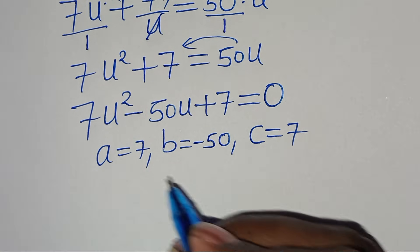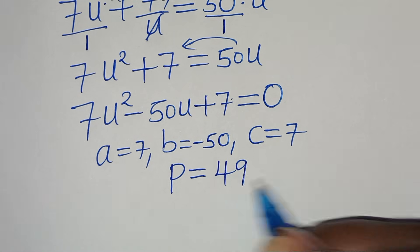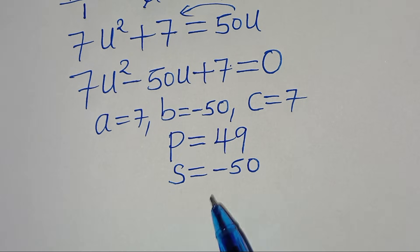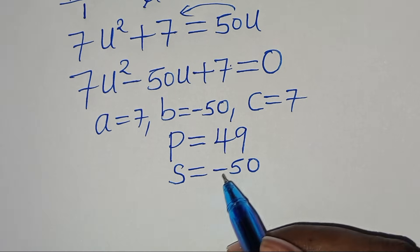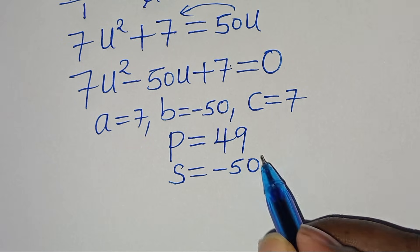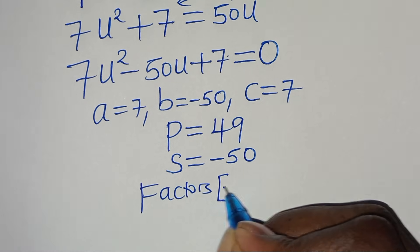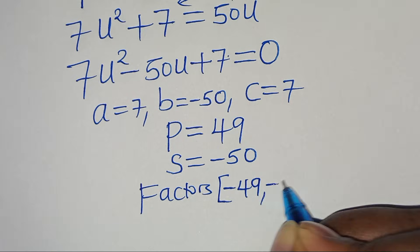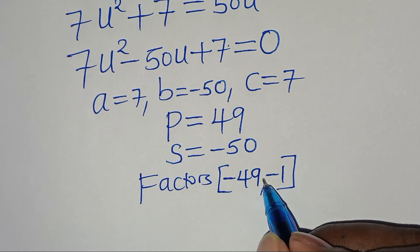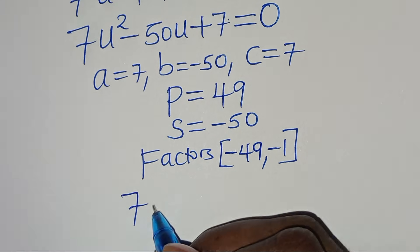We can solve this quadratic equation by the factorization method. The product is equal to 7 times 7, which is 49, and the sum is equal to minus 50. We need to identify two factors such that when we multiply them we get 49, and when we sum them we get minus 50. These two factors are minus 49 and minus 1, since minus 49 times minus 1 is 49 and minus 49 plus minus 1 is minus 50.